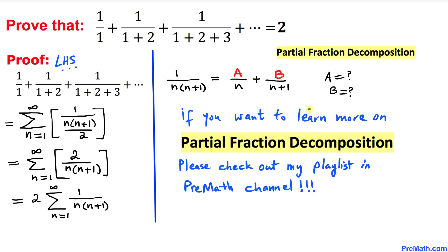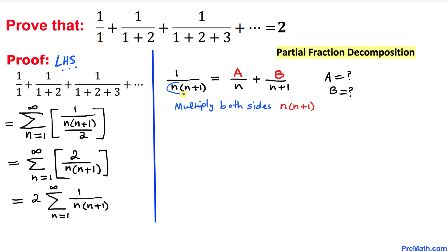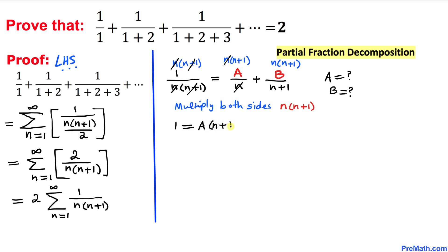If you want to learn more about partial fraction decomposition, I have many videos in my pre-math YouTube channel. Now, multiplying both sides by n times (n plus 1), the denominators cancel and we get: 1 equals A times (n plus 1) plus B times n. We'll call this equation number 1.